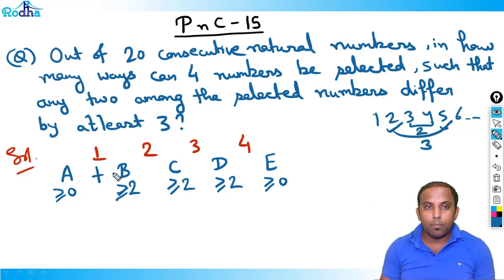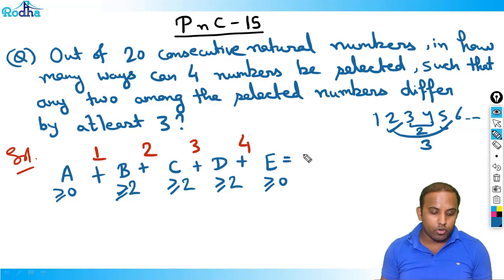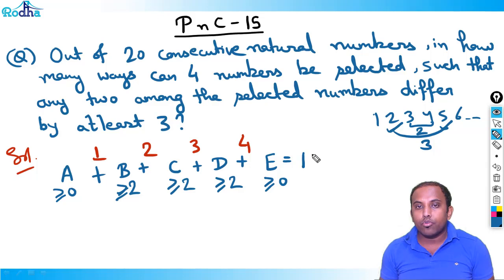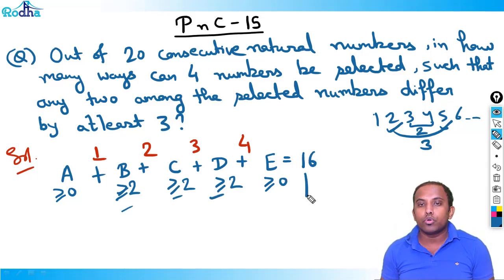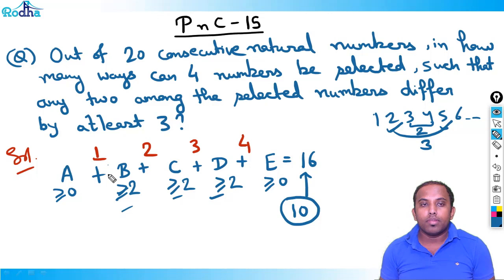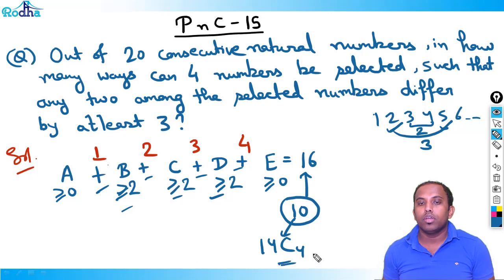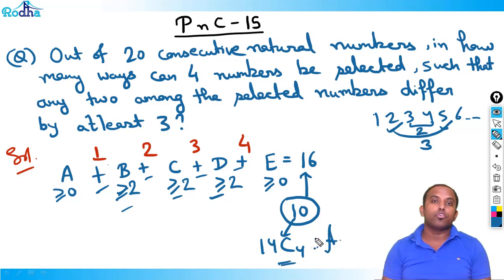So let's finish it now. a + b + c + d + e = how much? Out of 20 numbers, I already selected four, so I'm left with 16. We give 2 to each of b, c, d — so we give 2+2+2 = 6, leaving us with 10. So 10 + 4 signs gives us 14C4. So 14C4 is the answer for this beautiful question.